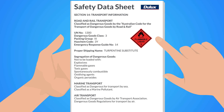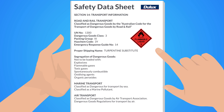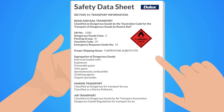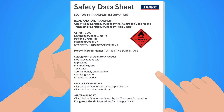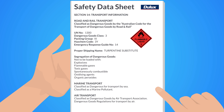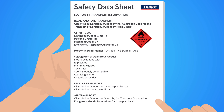Section 14 lists the information required for transportation, such as the UN number, transport hazard class, and packing groups related to the chemical's transport by road, rail, sea, or air.